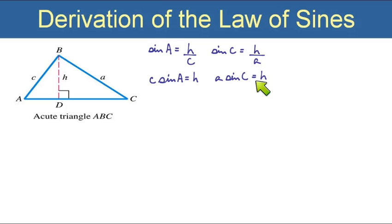Well they're both equal to H so they should be equal to each other. Now this is the law of sines, it's just not in its most familiar form. What they usually do is solve it so that sine of A is over side A and sine of C is over side C.